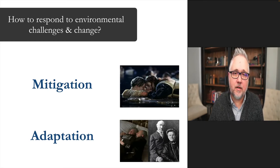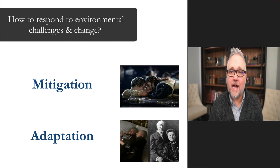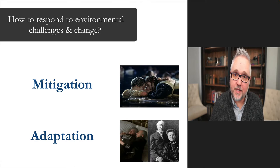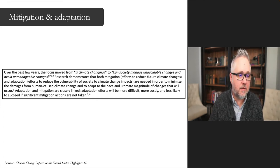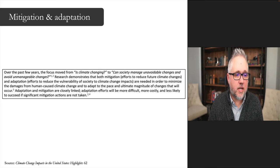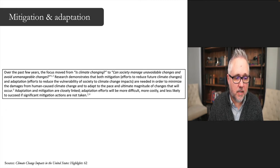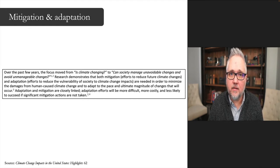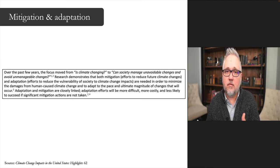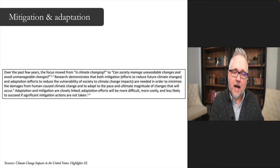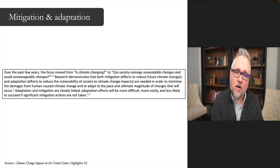So how do we respond to environmental challenges and change? As I mentioned before, through mitigation or adaptation. One U.S. report talks about how the focus has moved from whether the climate is changing to whether society can manage unavoidable changes and avoid unmanageable changes. Adaptation and mitigation are closely linked — adaptation efforts will become more difficult, more costly, and less likely to succeed if significant mitigation actions are not taken. The extent of mitigation directly shapes how much adaptation will actually be needed going forward.